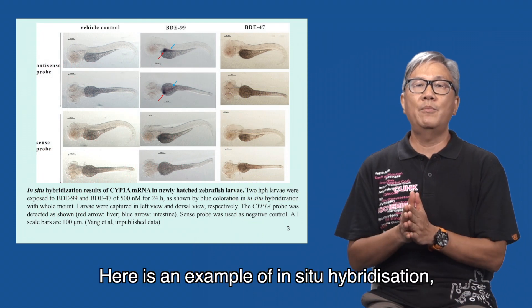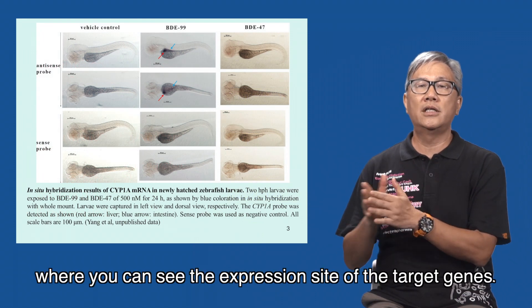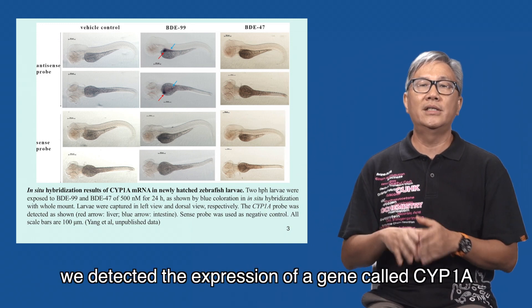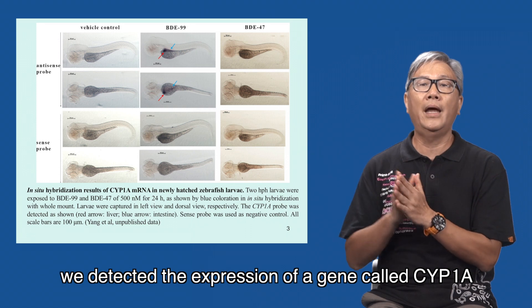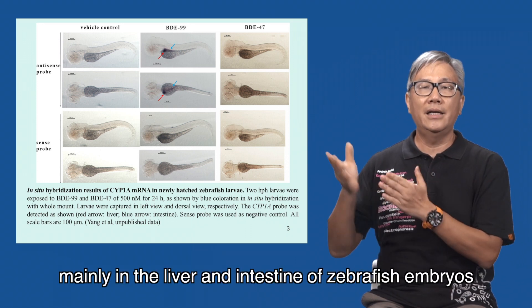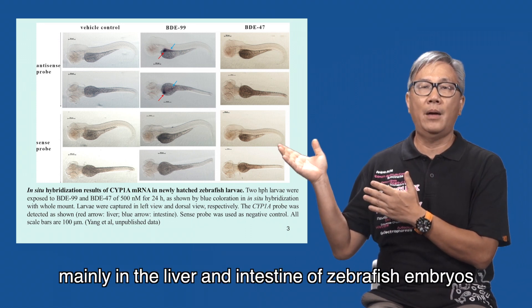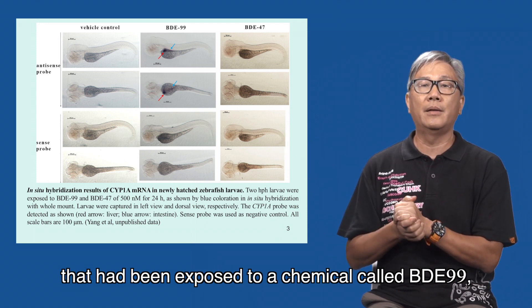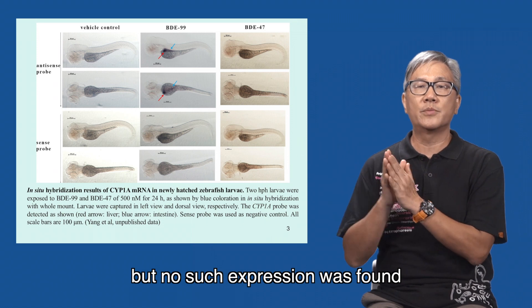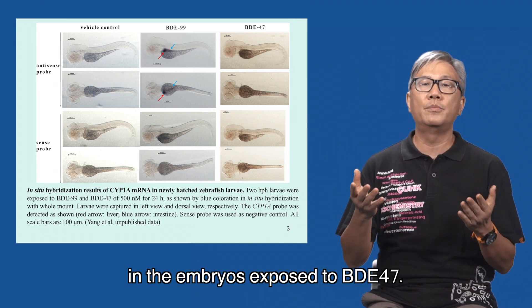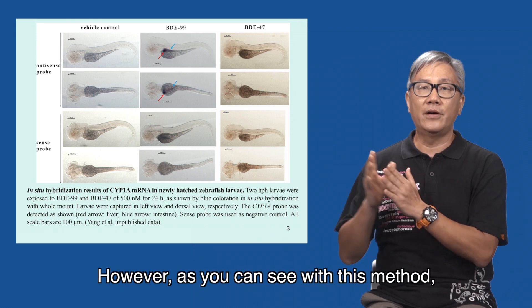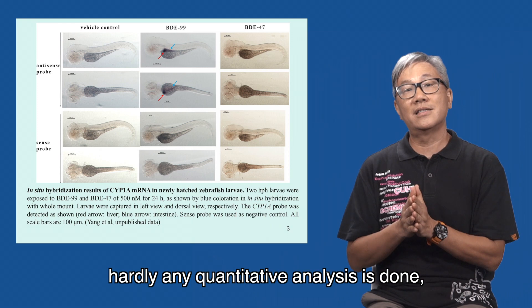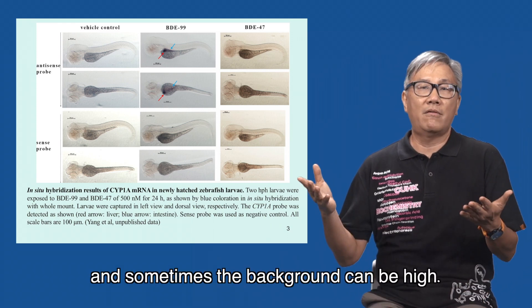Here is an example of in-situ hybridization where you can see the expression site of the target genes. In this case, we detected the expression of a gene called CYP1A, mainly in the liver and intestine of silverfish embryos that had been exposed to a chemical called BDE99, but no such expression was found in embryos exposed to BDE47. However, as you can see with this method, hardly any quantitative analysis is done, and sometimes the background can be high.